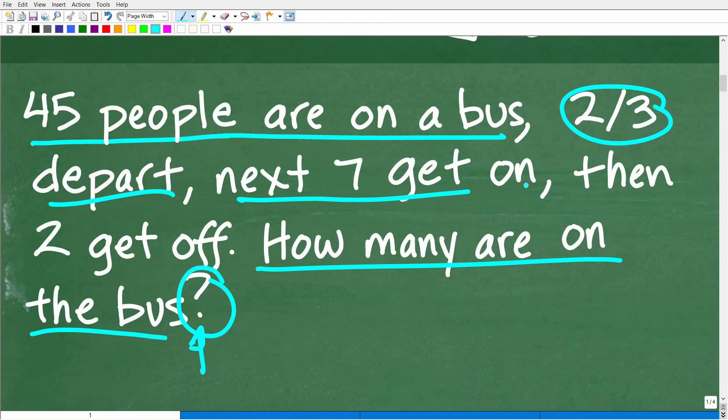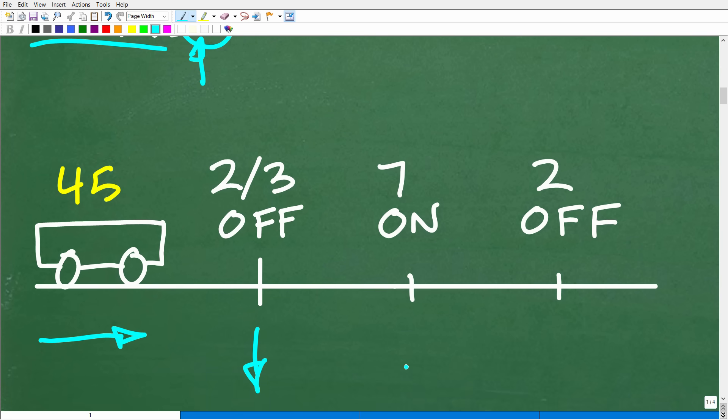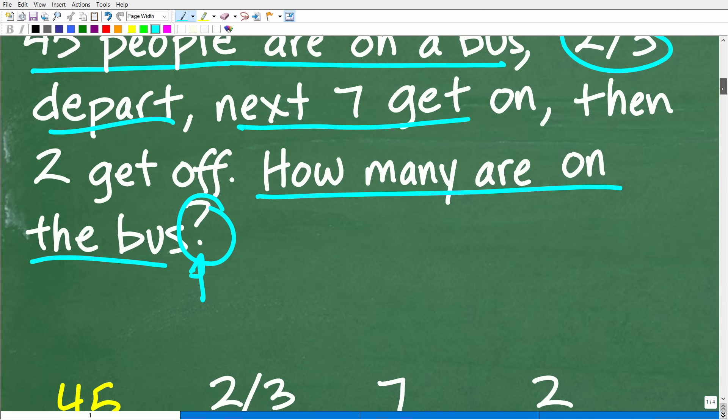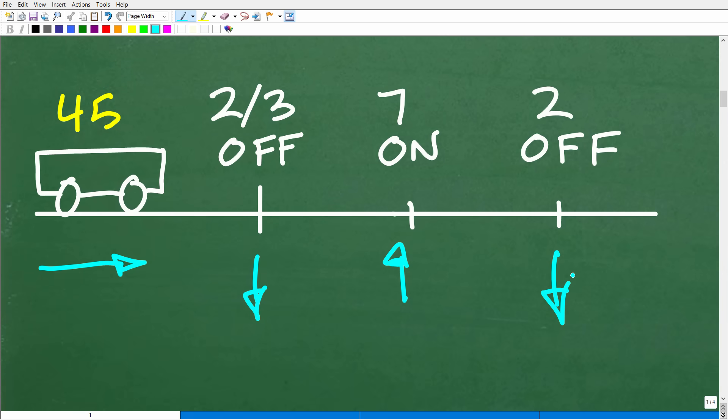And of course, this is like in chronological order. Next, seven people get on the bus, all right? So we're going to have to come over here. Seven people get on the bus. And then lastly, we have two people are going to depart the bus right here. So after all these people getting off and on and off and on the bus, how many people remain? Okay, so this is kind of a visual representation of what's going on.